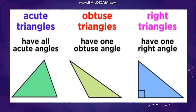Moving on to the next slide: acute triangle, obtuse triangle, and right triangle. In an acute angled triangle, all angles are acute. In an obtuse triangle, it will have one obtuse angle. And in a right angled triangle, you have one right angle. So thank you, children.